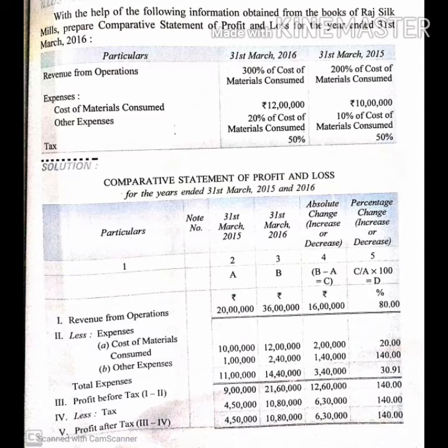First of all, we are going to set up the columns: previous year and current year. The first column we are going to fill in is revenue from operations.